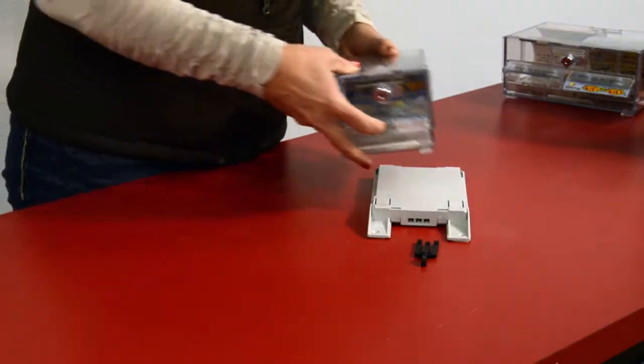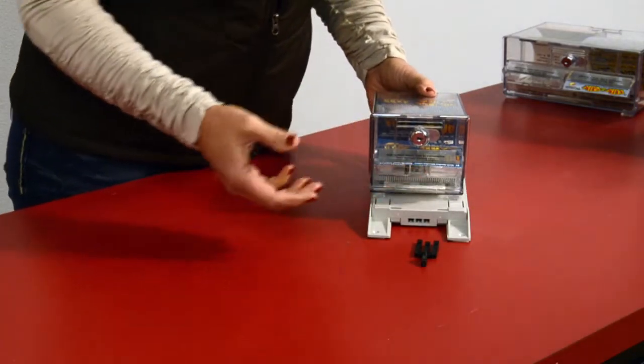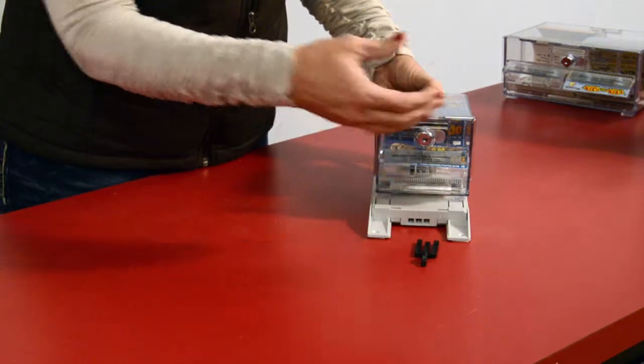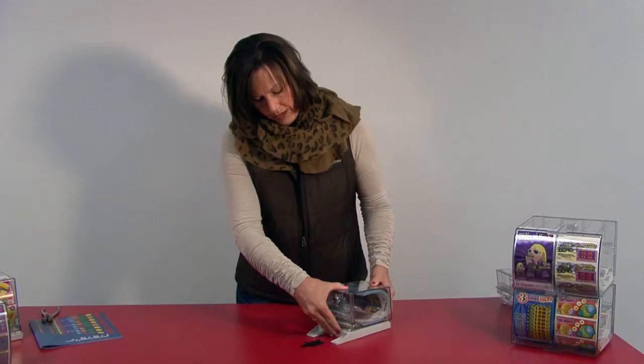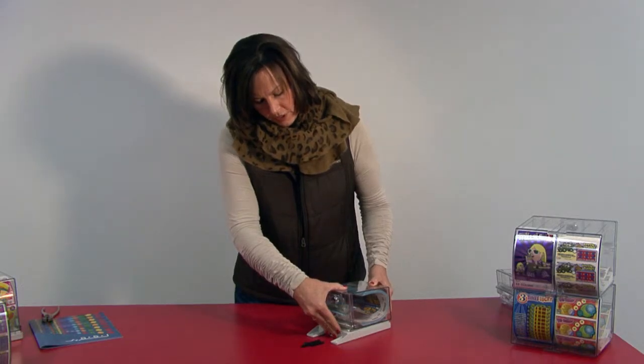You'll take your dispenser and place it on the lockable slide mount, and you will slide it, applying pressure to the dispenser, and hook it in place.